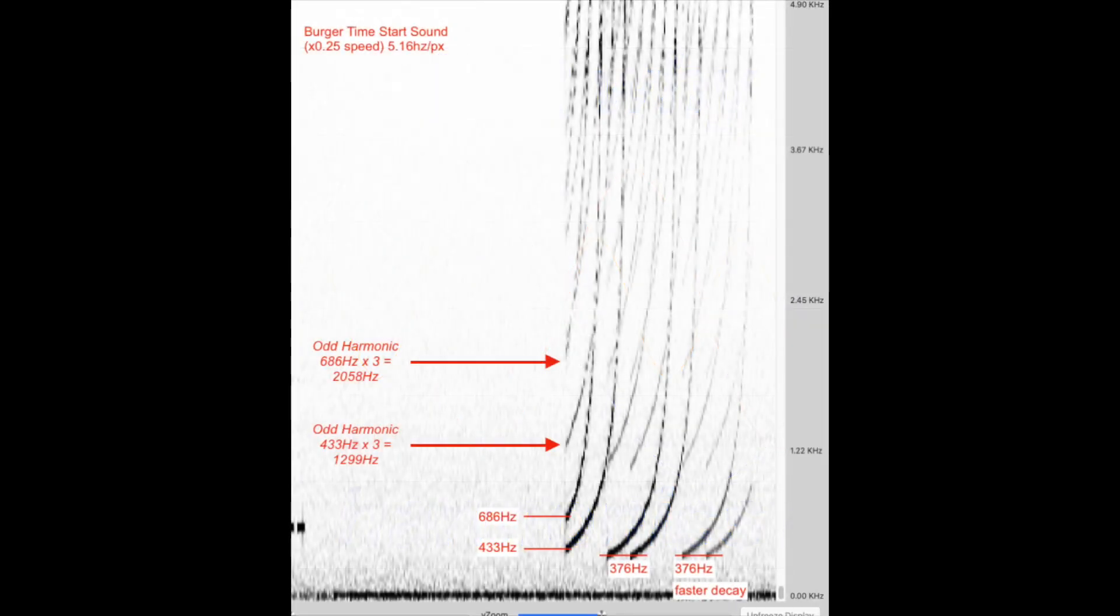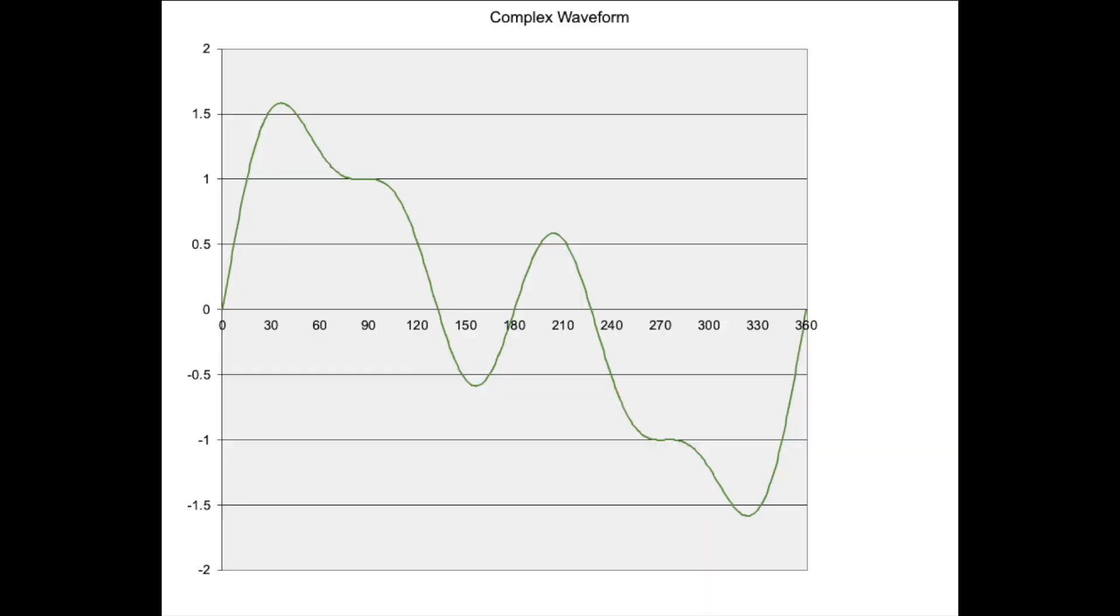In our example, the harmonics are at frequencies of three times the fundamentals. But why is this the case? Why aren't the harmonics at two times or six times the fundamental? Or why are there any harmonics at all? This goes to the heart of describing complex waveforms.